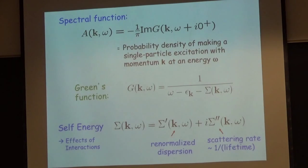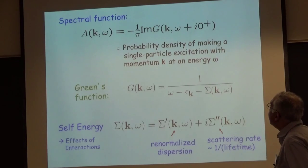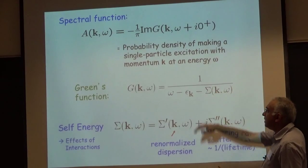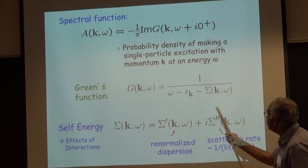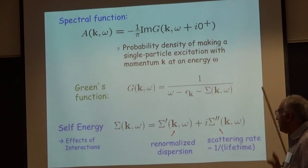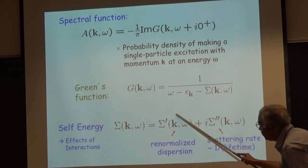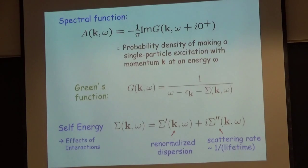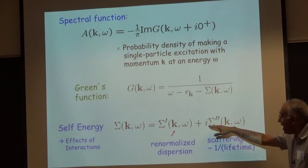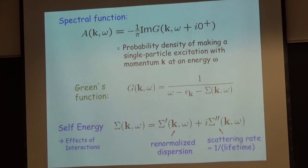Here is the one-electron spectral function, which, as I already told you, is the probability density of making a single particle excitation given a momentum k and an energy omega. This is related to the Green's function. In a non-interacting system, the Green's function would just be 1 over (omega minus epsilon_k). All the effects of interactions are related to a function called the self-energy. The self-energy has a real part and an imaginary part, and they are related by Kramers-Kronig conditions. What sigma prime, the real part of the self-energy, does is to renormalize the dispersion — it modifies epsilon_k. And what the imaginary part does is to give things widths.